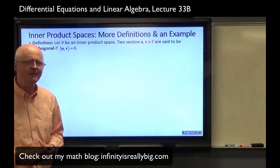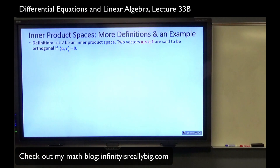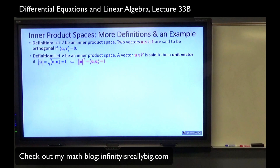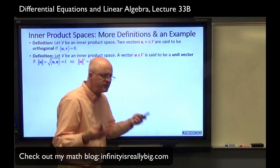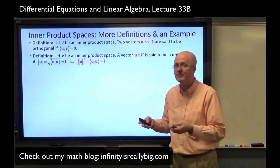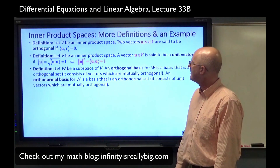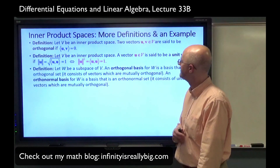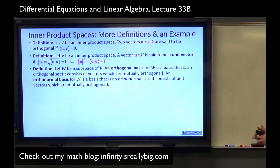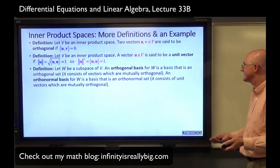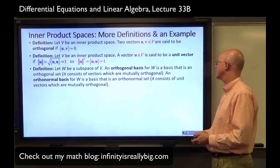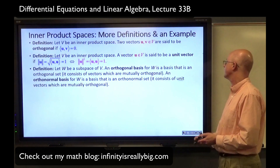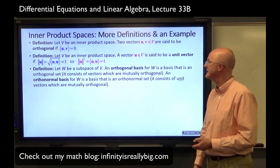Are dot products the only kind of inner product for finite-dimensional vectors? Actually, no — there are more inner products than just the standard one. A vector U is said to be a unit vector if and only if its magnitude is one, which is equivalent to the inner product of the vector with itself being one. An orthogonal basis for a subspace W is a basis that is an orthogonal set — the vectors are mutually orthogonal. An orthonormal basis consists of unit vectors that are mutually orthogonal, so the inner product of any two distinct vectors is zero.